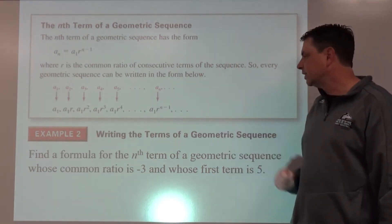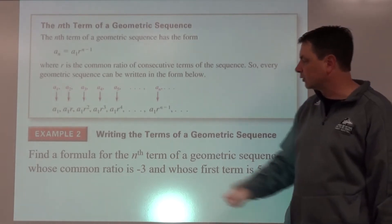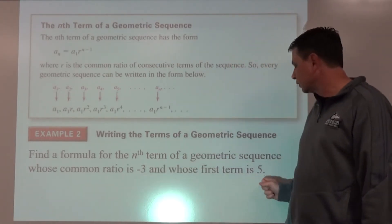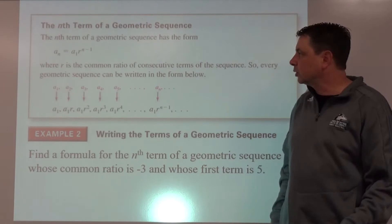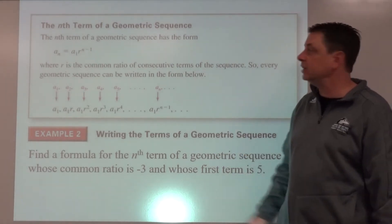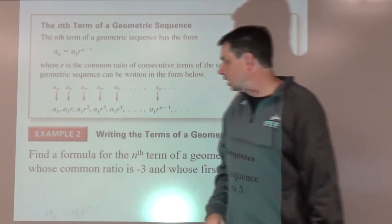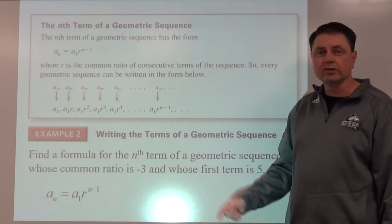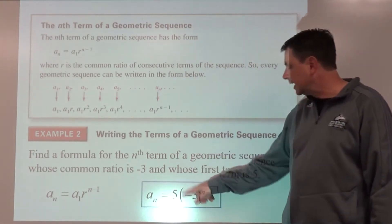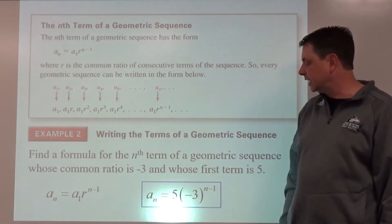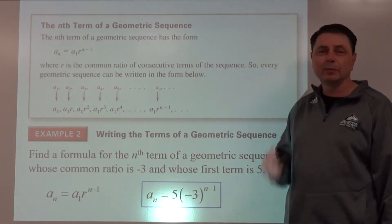Find the formula for the nth term of a geometric sequence whose common ratio is negative 3 and whose first term is 5. We know both things we need: a-sub-1 and r. The formula is a-sub-n equals 5 times negative 3 to the power of n minus 1.